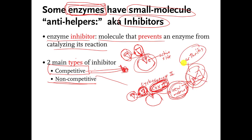There are many molecules that work like this, including aspirin, ibuprofen, Aleve, and Celebrex. There are many different medicines we actually take that are competitive inhibitors for COX2, and this is how they work — they compete with whatever normally sits in the active site of COX2 to stop it from working.